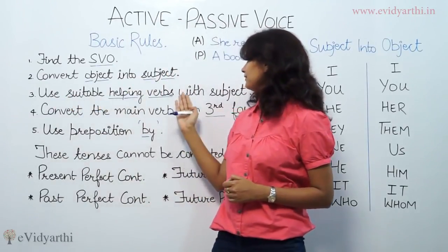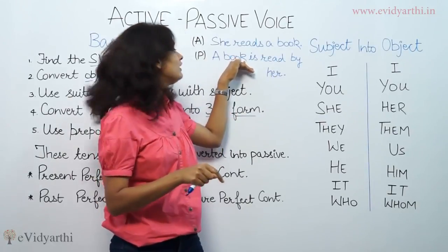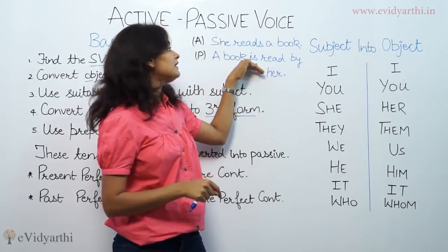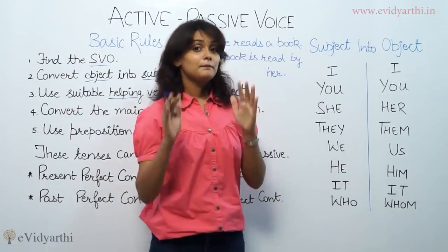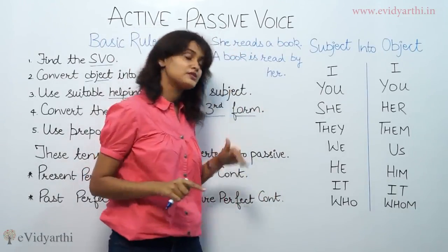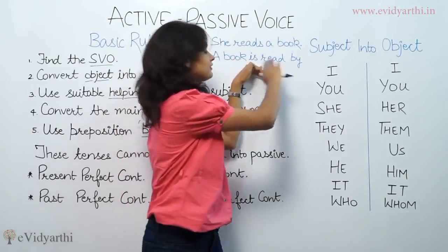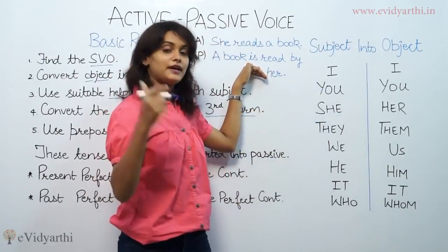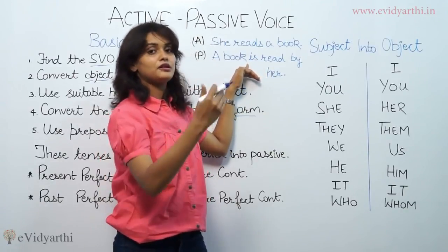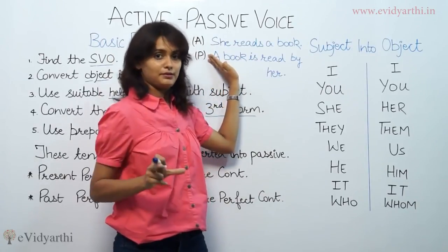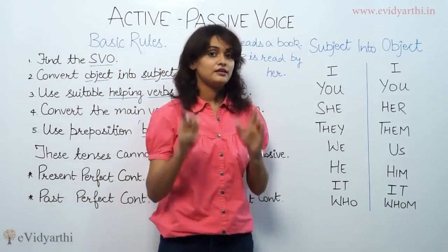Next: what is the suitable helping word to use with the subject? It is very important that you use the right helping word with the subject. Since the active voice is in simple present tense, the helping words there are 'do' and 'does.' But once we convert it into passive voice, we put 'is' as the auxiliary helping word. In further sessions you will find the main auxiliary or helping words according to the tenses.